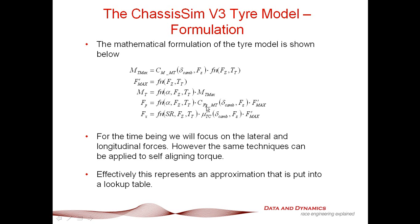The camber multipliers — CFY underscore MT laterally and mu-prime traction circle — are effectively the way we represent the traction ellipse. These two terms, CFY_MT and mu-prime traction circle, effectively dictate the shape of the traction ellipse as camber varies. That's all that represents. And finally, that is multiplied by the traction circle radius. This is the heart of the ChassisSim V-Free Tire Approximation and what we are going to be manipulating.